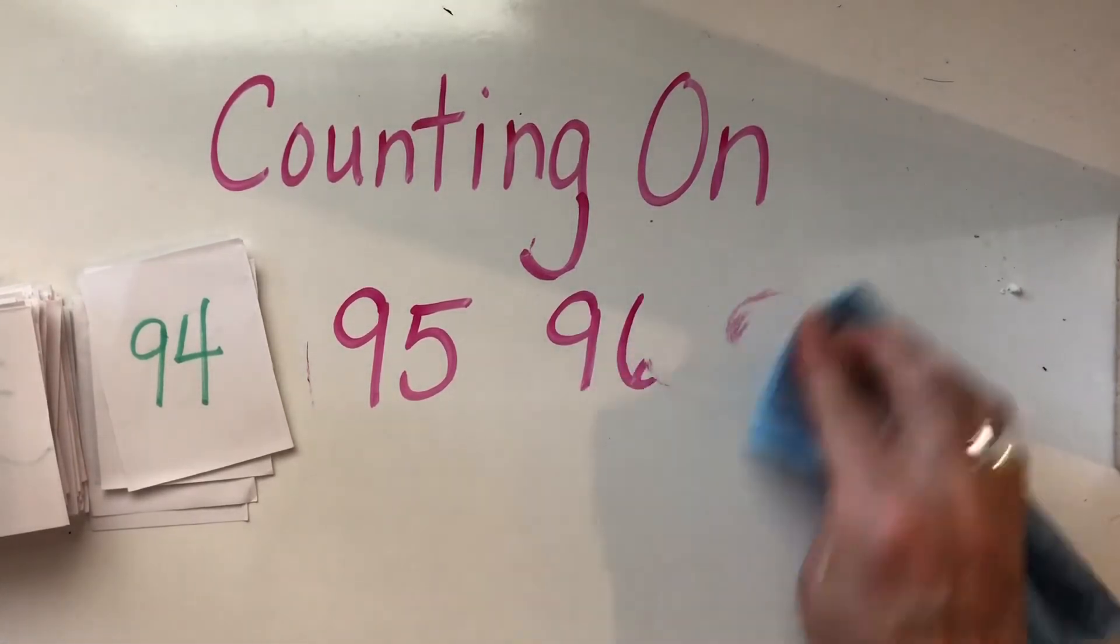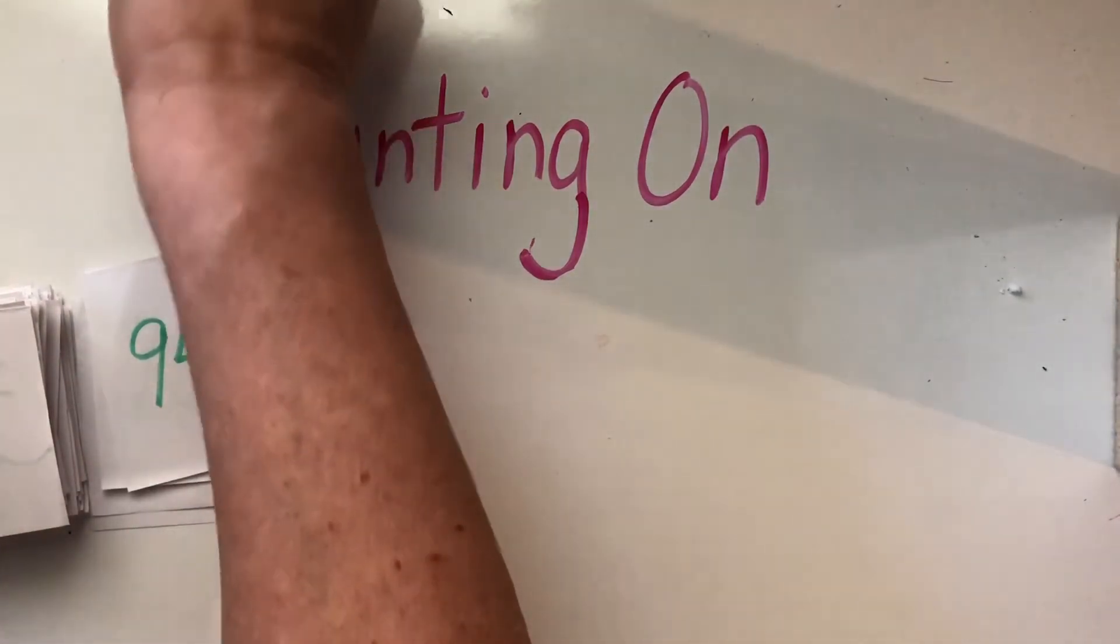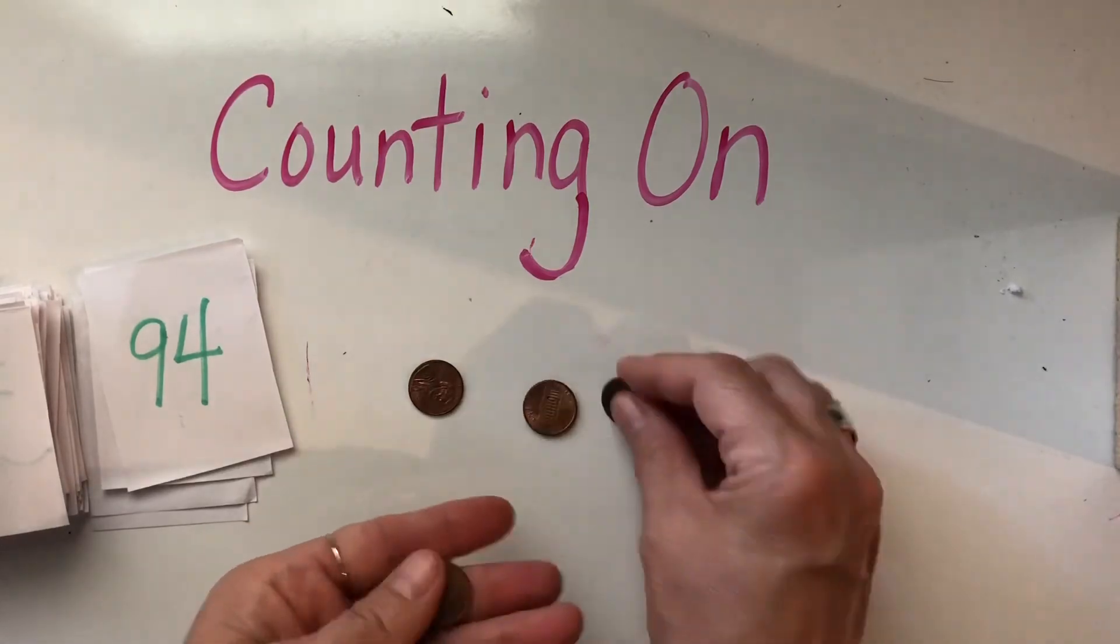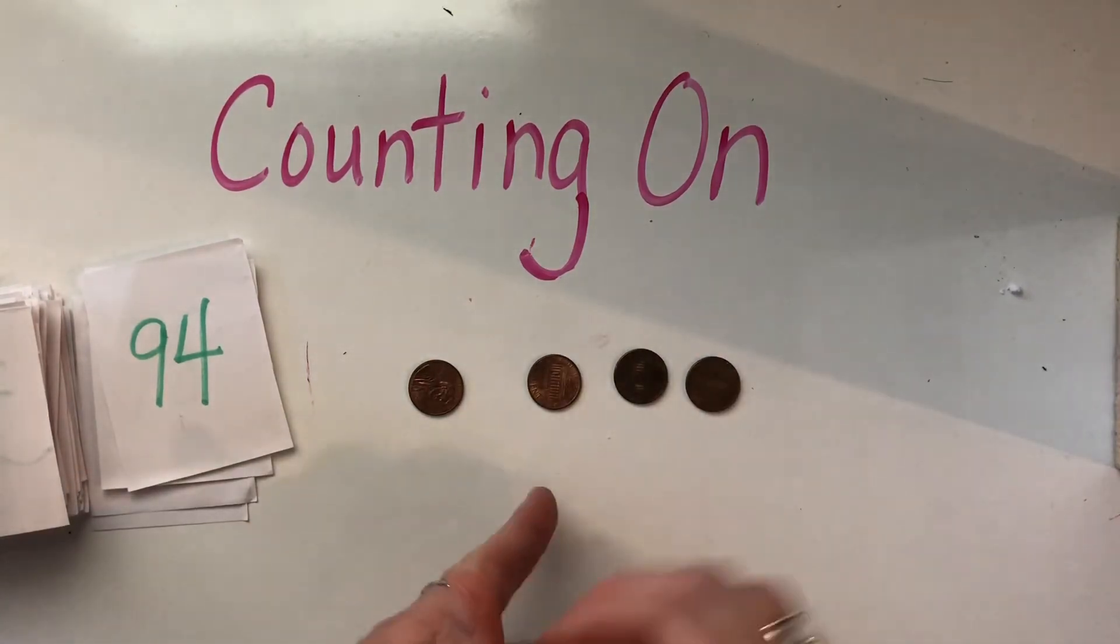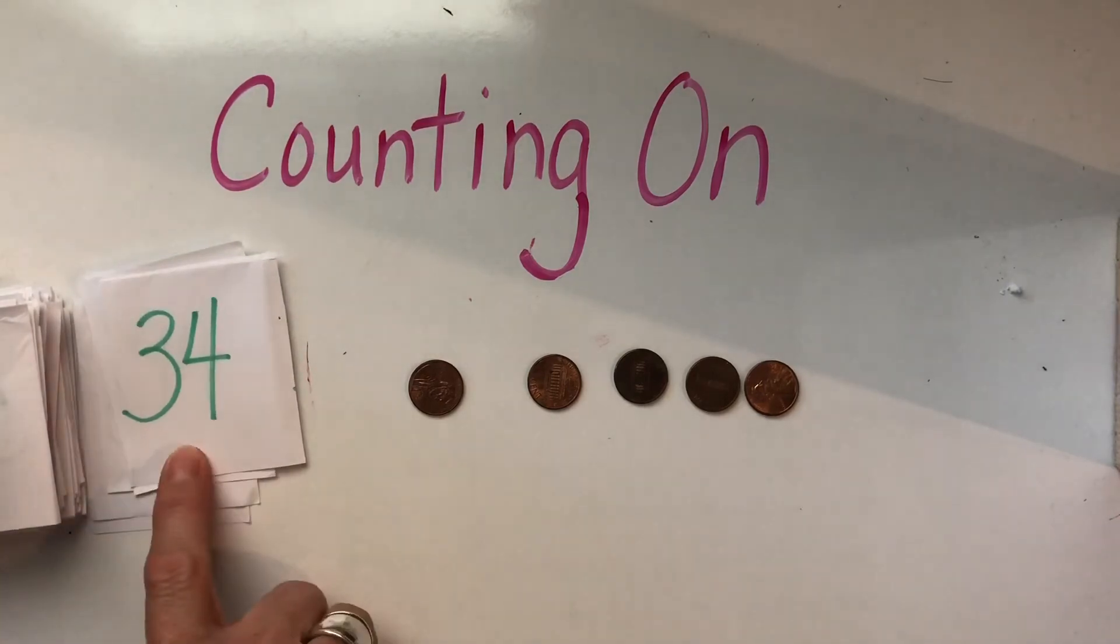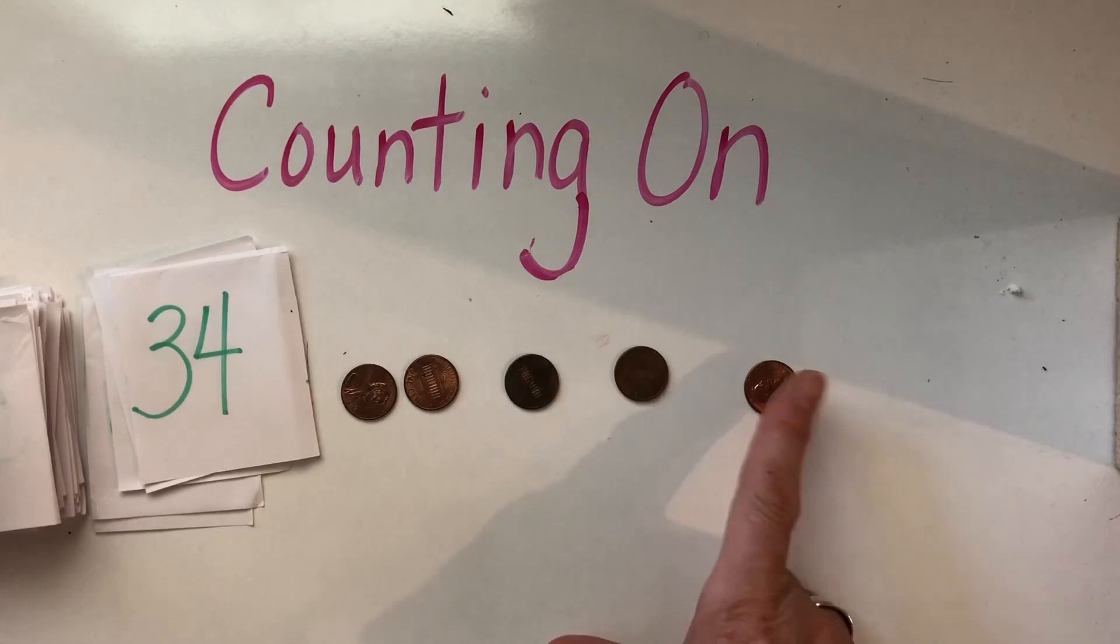You could also do it like this. Take some counters. I'm going to use five pennies. And I'm just going to put them in a row. And I'm going to flip over a card. 34, 35, 36, 37, 38, 39.